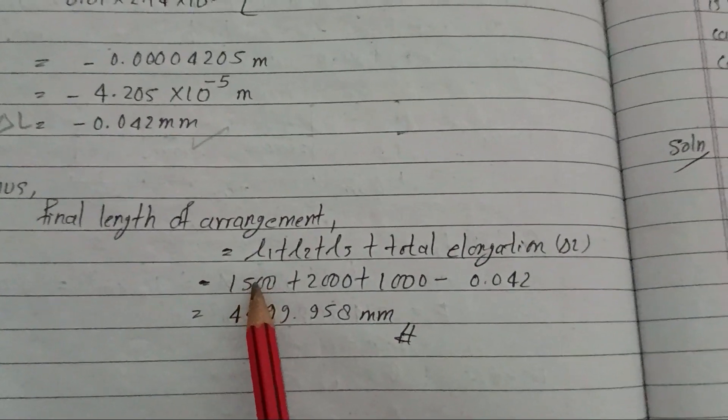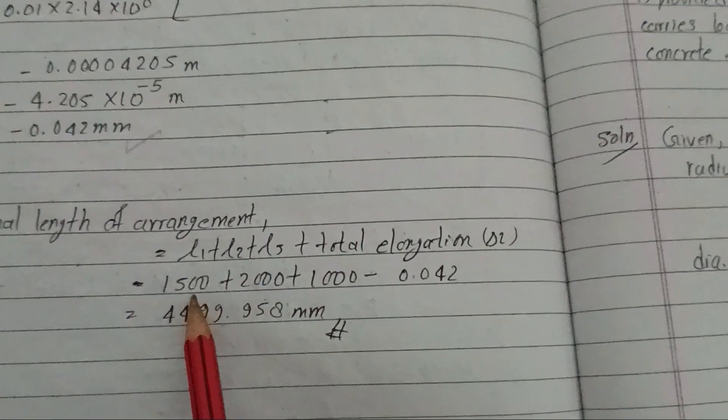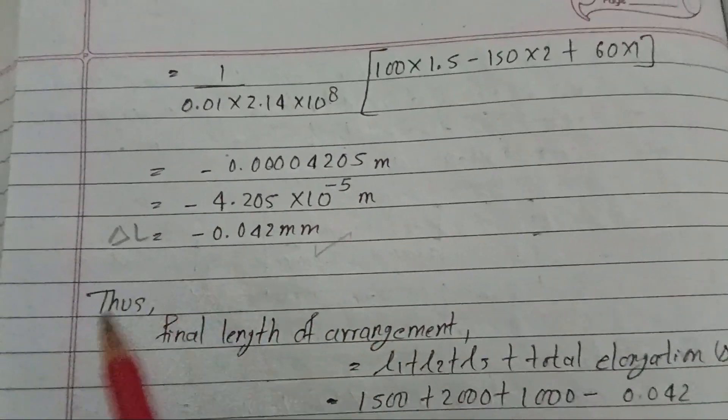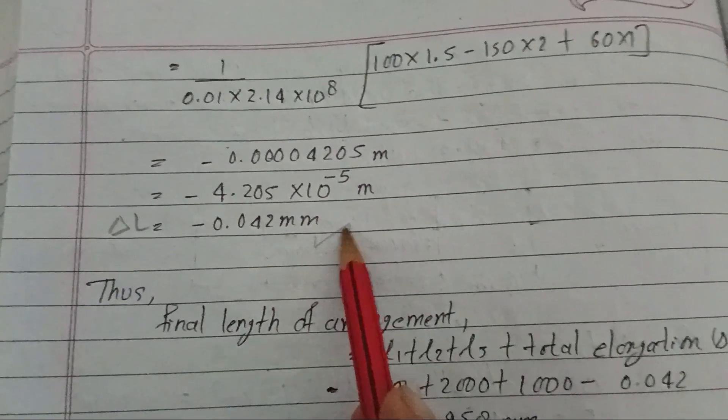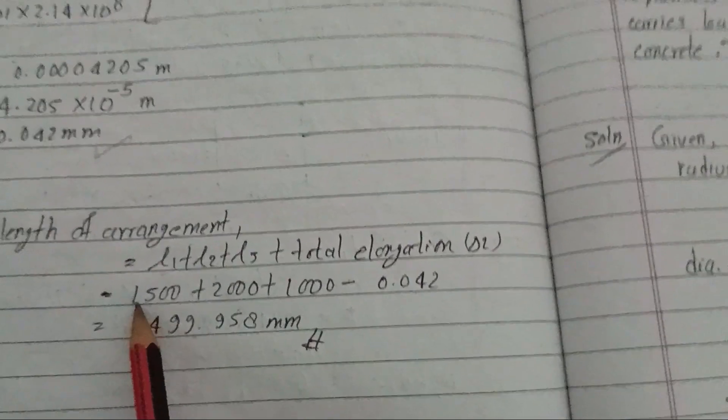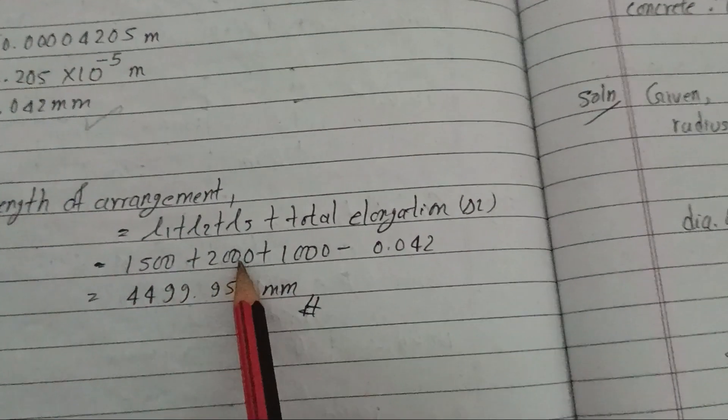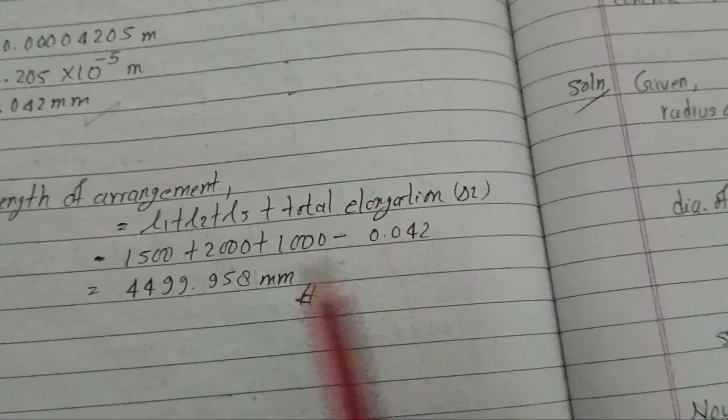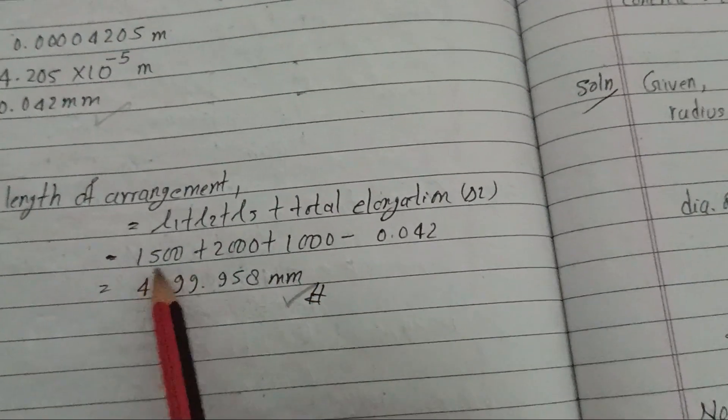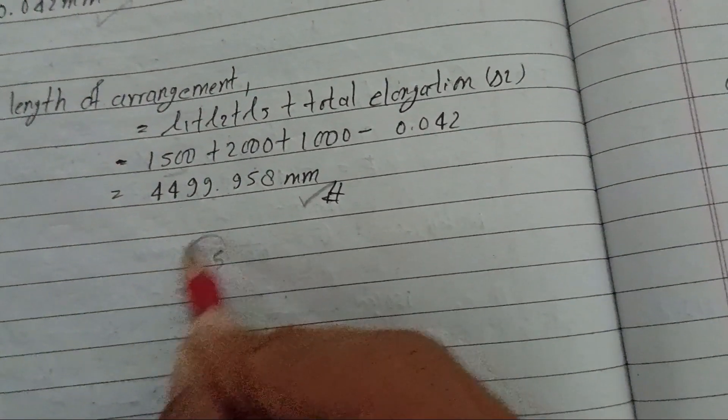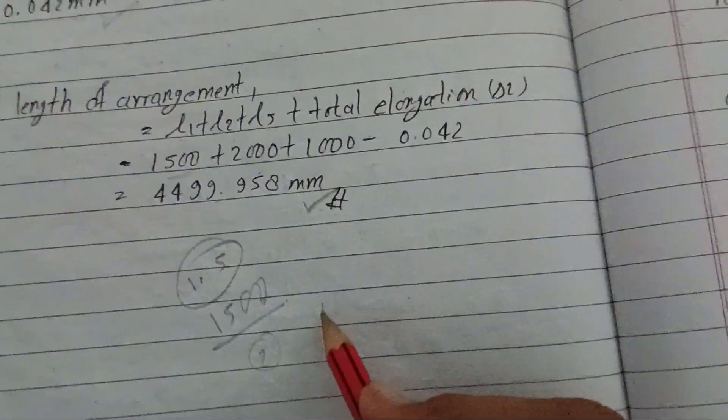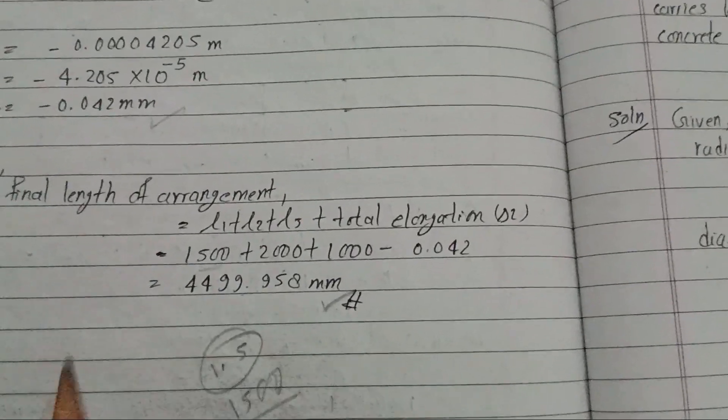Now to find the final length of arrangement, we add: length 1 plus length 2 plus length 3 plus total elongation. That is 1.5 meter, which is 1500 mm, plus 2 meter which is 2000 mm, plus 1 meter which is 1000 mm. The total is 4500 mm. Adding the elongation of minus 0.042 mm, we get 4499.958 mm. This is the solution of this question.